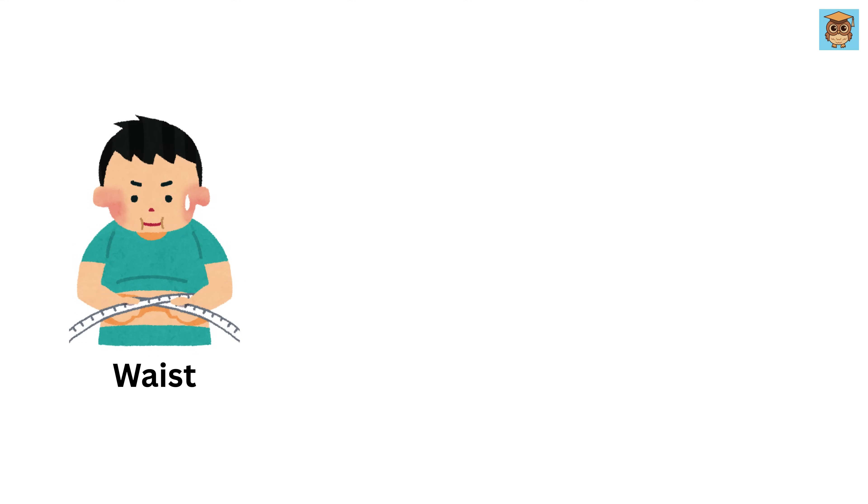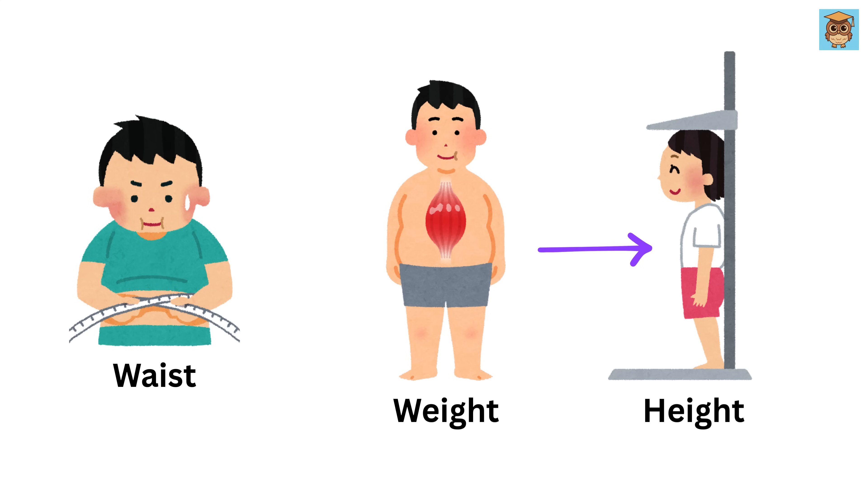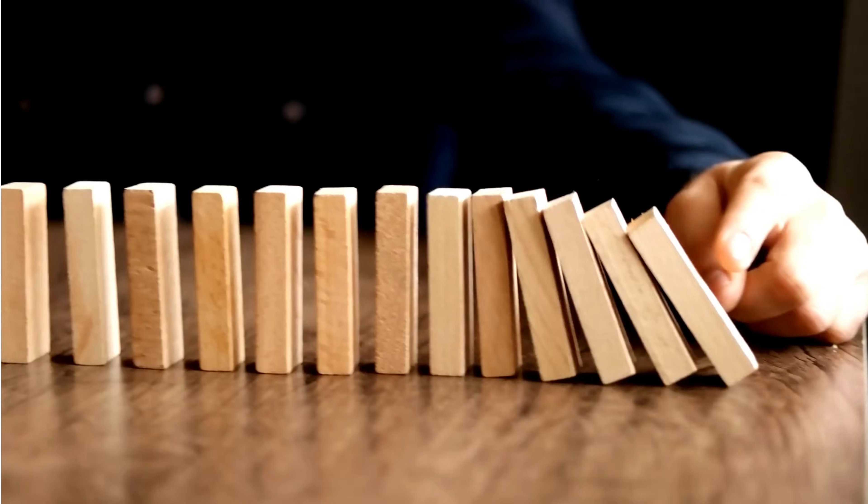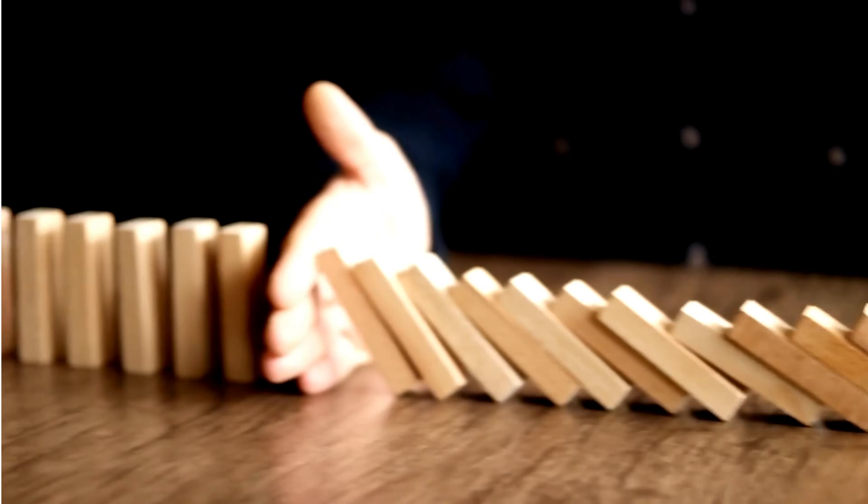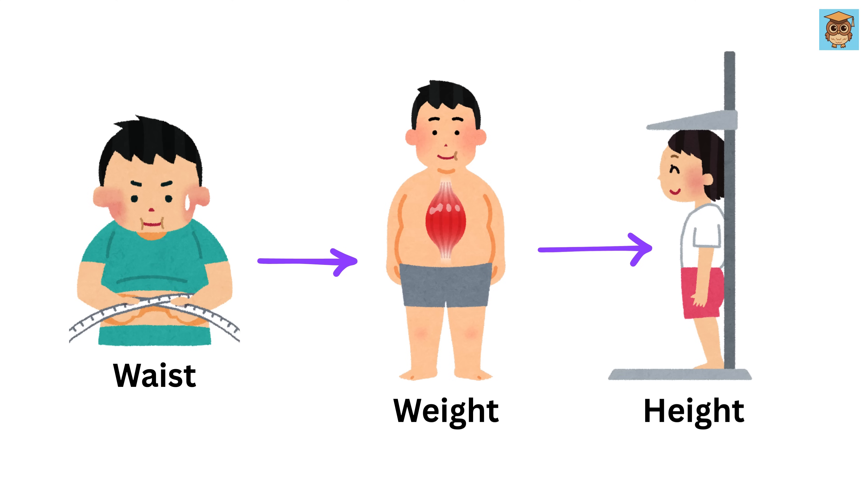Suppose we want to understand how our waist size changes when our height changes. But here's the twist. Our waist doesn't directly depend on our height. Instead, when we get taller, we usually gain some weight, and that extra weight is what changes our waist size. So there's a kind of domino effect. Height affects weight and weight affects waist size. But our question was, how does waist change as height changes?